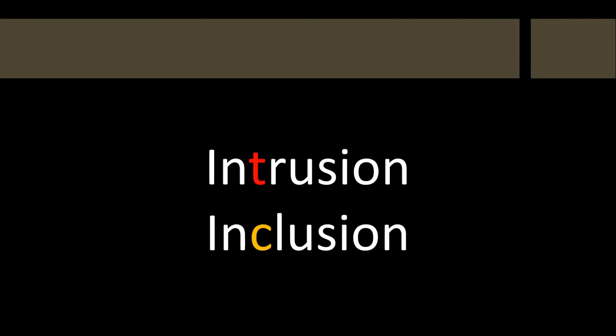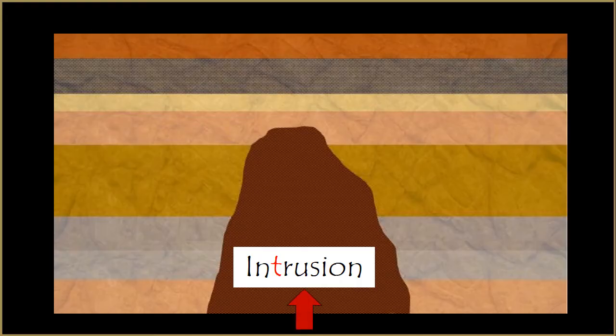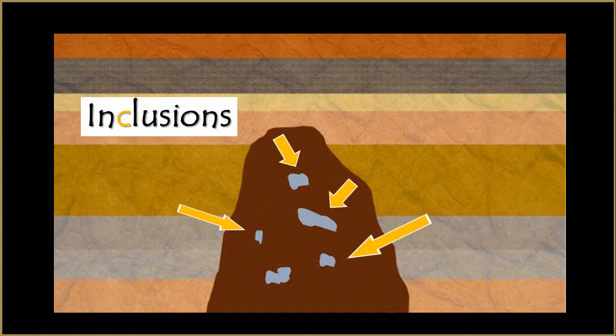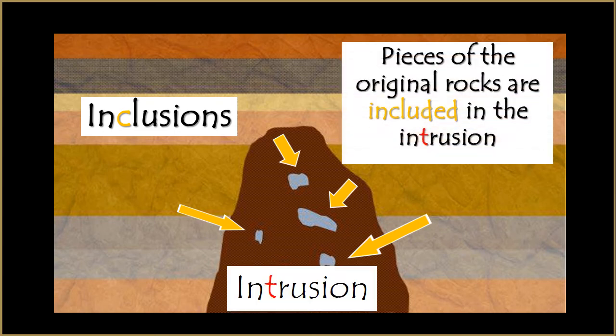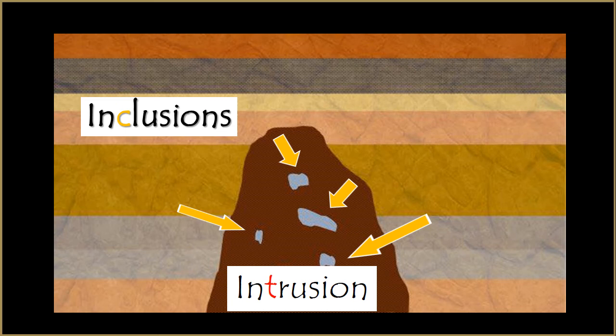To understand the next piece of information about cross-cutting relationships, you will need to pay attention to two very similar words: intrusion with a T, and inclusion with a C. Sometimes when magma pushes up between existing rock layers — forming an intrusion — pieces of those rock layers break off and get stuck in the magma. Geologists call these inclusions. You can remember this by thinking that these pieces of the original rocks are included in the intrusion. Like the original rock layers they came from, inclusions are older than the younger or more recent intrusion of magma.